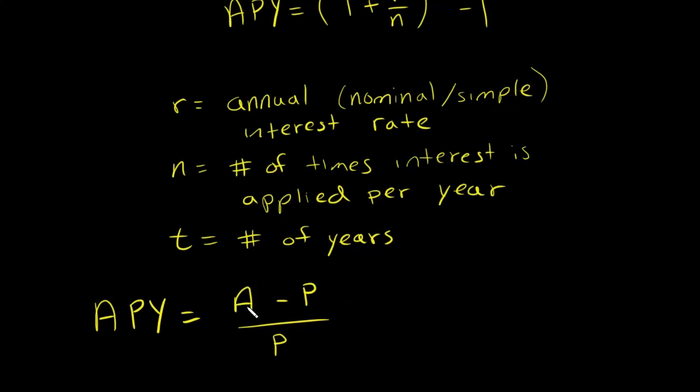Now A, the amount that you have at the end of a certain amount of time, equals P times (1 + R/N) to the NT. P is the amount that you started with. R/N is your annual rate divided by the number of times that you are compounding per year. N is the number of times you are applying per year, times T, the number of years.